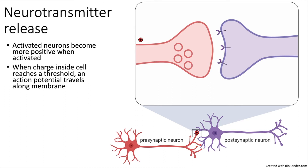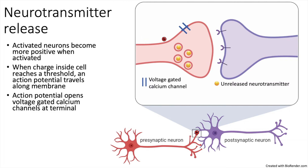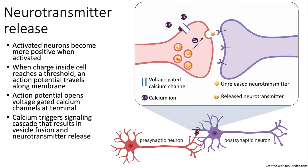The action potential then reaches the axon terminal, where neurotransmitters reside in vesicles. The membrane at the axon terminal also contains voltage-gated calcium channels. These channels open in response to changes in voltage. The open channel allows calcium ions, which are far more abundant outside the cell, to flow into the terminal. These calcium ions induce a cascade of events that results in the neurotransmitter vesicles fusing to the terminal membrane and ultimately releasing the neurotransmitters that can influence postsynaptic neurons.